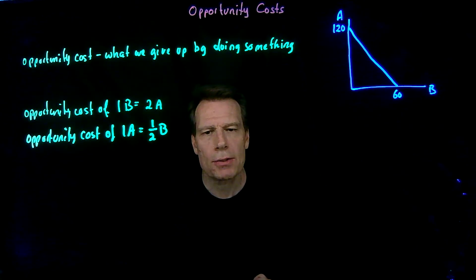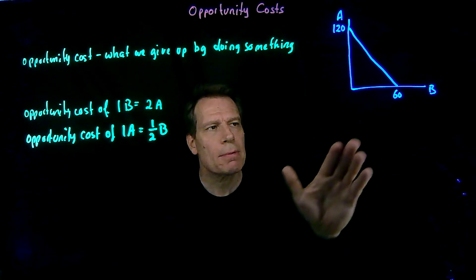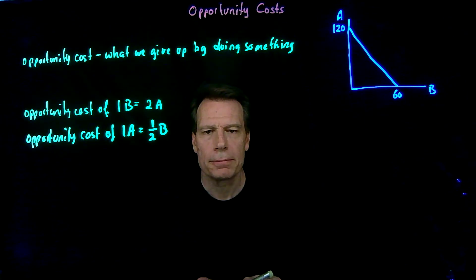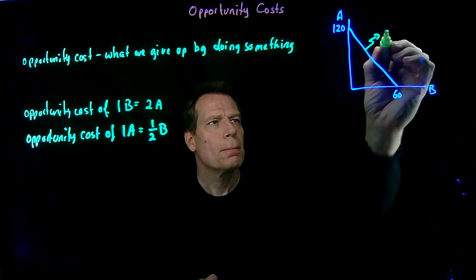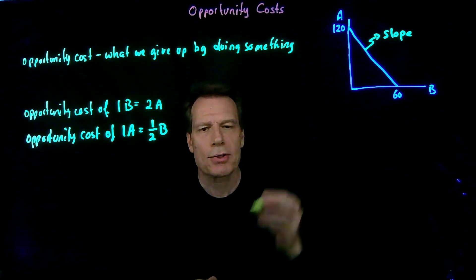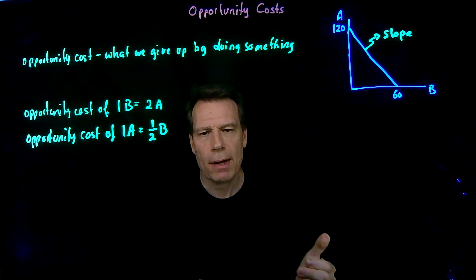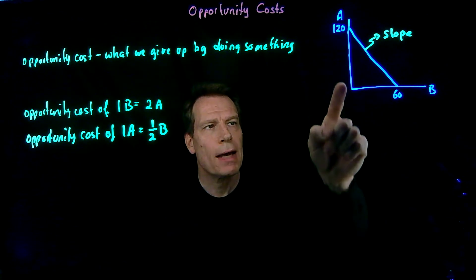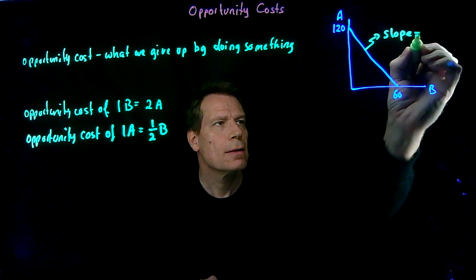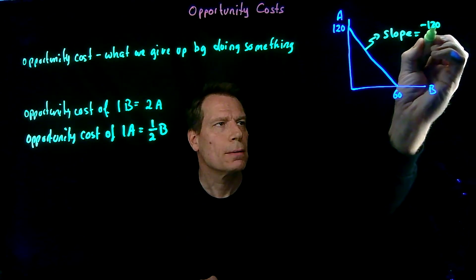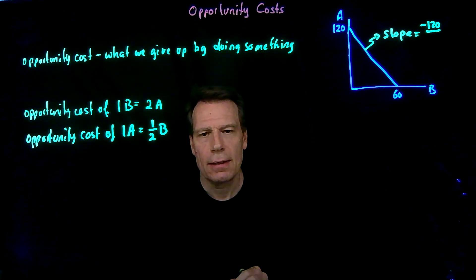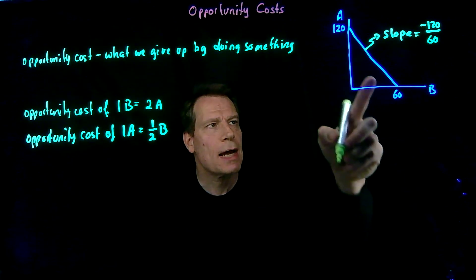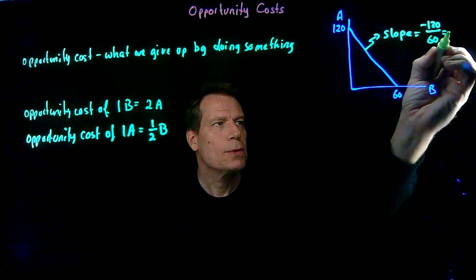So where do we see that in the production possibility curve? Let's label something we haven't labeled yet — we've labeled the intercepts, but we haven't labeled the slope. The slope of this production possibilities curve is the rise divided by the run. When we go from one point to the other, we go down by 120 — a negative rise of 120 — and over by 60, a run of 60. So the slope of this line is minus 120 divided by 60, which is minus 2.